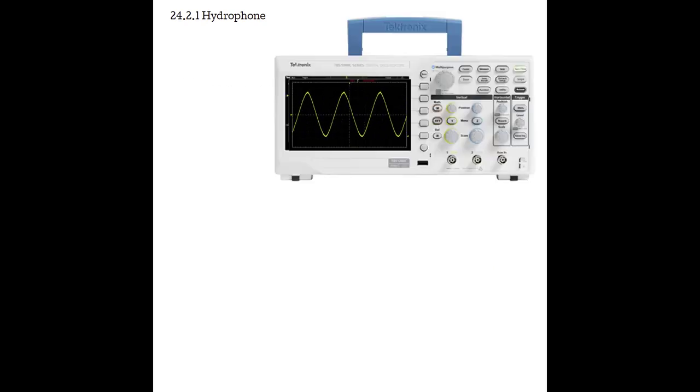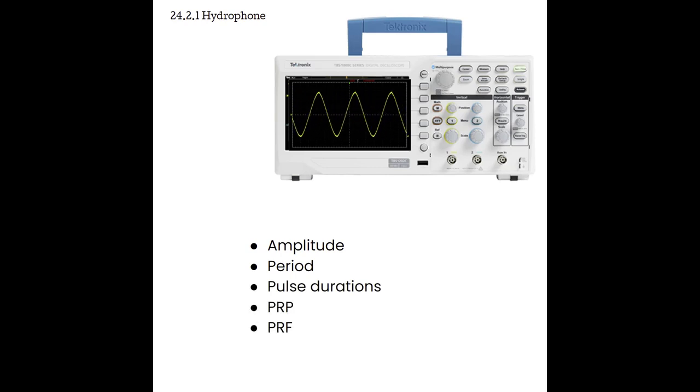When the probe is inserted into the beam path, the oscilloscope displays the information received by the PZT. So the hydrophone is actually able to detect quite a few things like amplitude, period, pulse durations, PRP, PRF, and the shape of the beam.